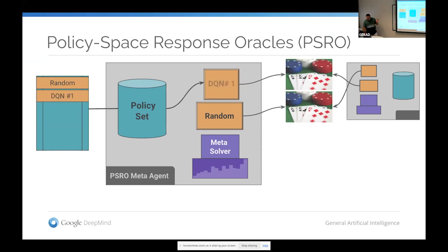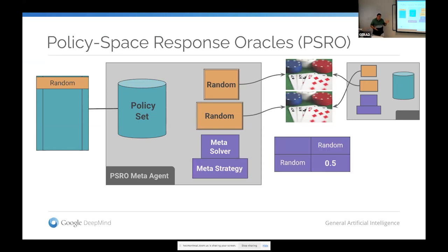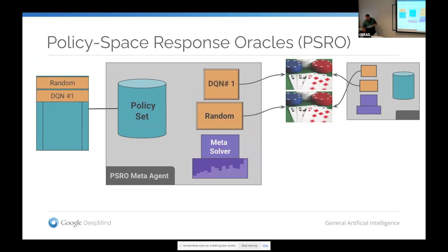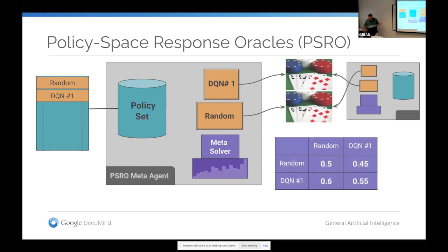Once we have the metagame, we want to grow the set of policies. We employ an approximate best response: if the opponent is playing random and we want to do better, we can set up a reinforcement learning style problem and play against them. We can use DQN — deep Q-networks — as a default algorithm to find an approximate best response. Once trained, we add it to our policy set. The opponent does the same. We keep iterating this, incrementally building our set of oracles.